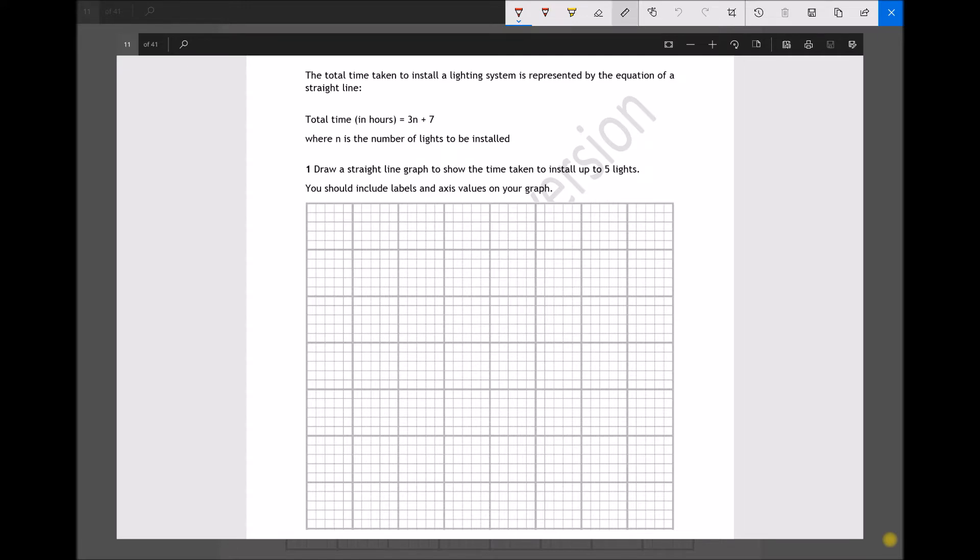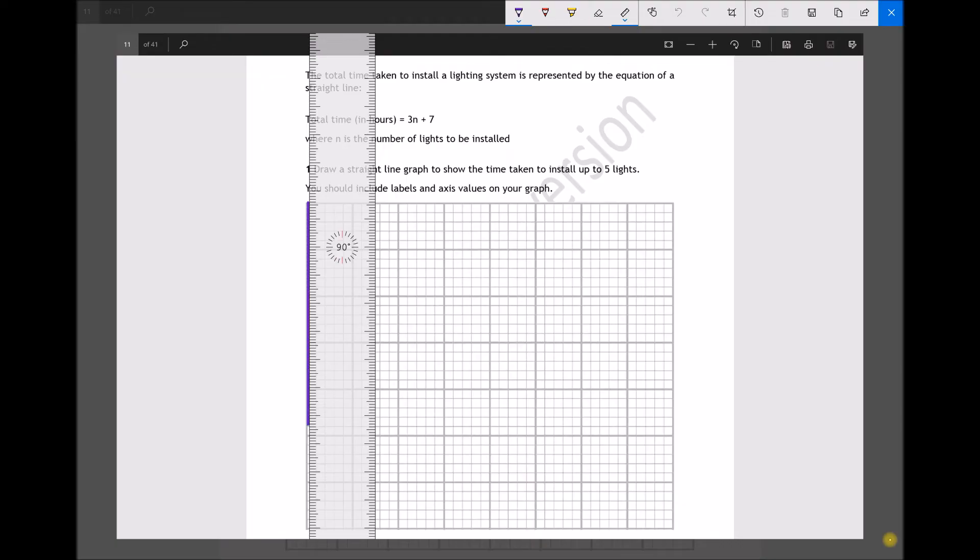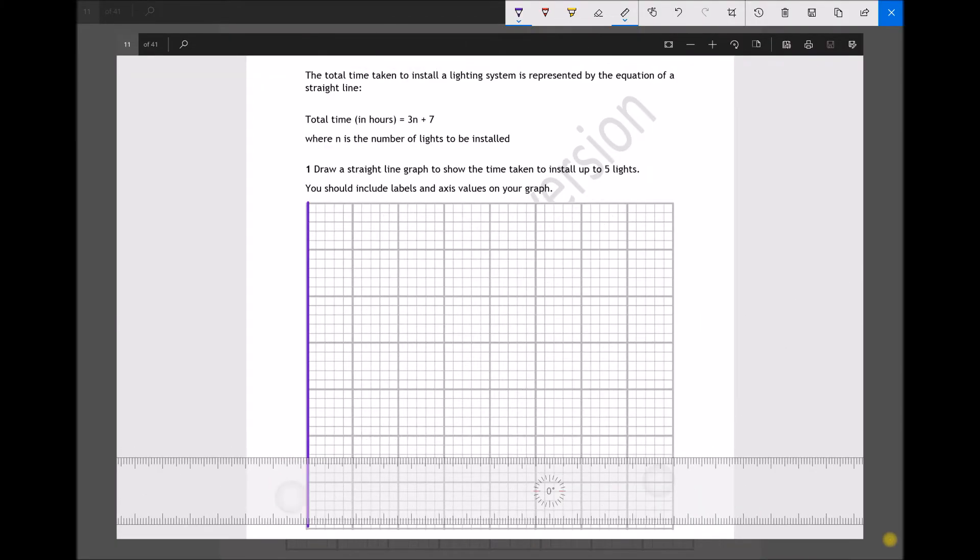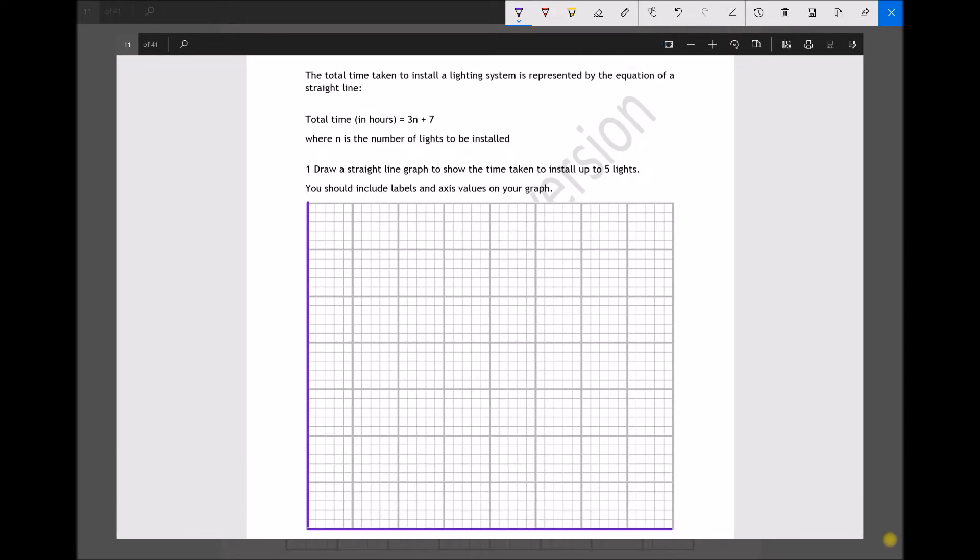So let's begin by setting up our axes. We're going to need two axes, a y-axis and an x-axis. On the x-axis, the axis along the bottom, we're going to have our number of lights. And on our y-axis, we're going to have our total time, but I'm also going to specify the units, which is hours.